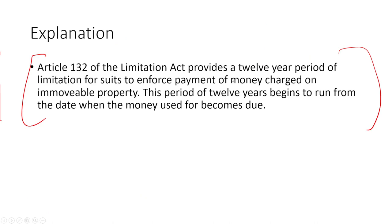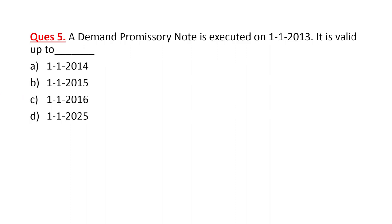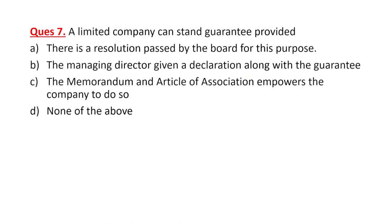Please remember the table — pause and read it. Notes will definitely be provided. Now, security documents are obtained in a bank for what purpose? For creation of evidence of having given a loan under the Evidence Act. It is not about keeping a record of all transactions, and it is not that it is unlawful to give loans without documents — the answer is B: keeping evidence of having given the loan under the Evidence Act.